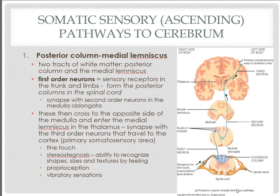These next slides describe sensory pathways for somatic information leading to the cerebral cortex. They still follow the same three-order neurons, but the pathways may differ. The posterior column medial lemniscus pathway utilizes the posterior white column and then the medial lemniscus in the midbrain. Crossing over takes place at the medulla oblongata, traveling to the thalamus where the third order neuron travels to the primary somatosensory cortex. Sensory information utilizing this path includes fine touch, stereognosis (ability to recognize shapes, sizes, and textures), proprioception, and vibratory sensations.